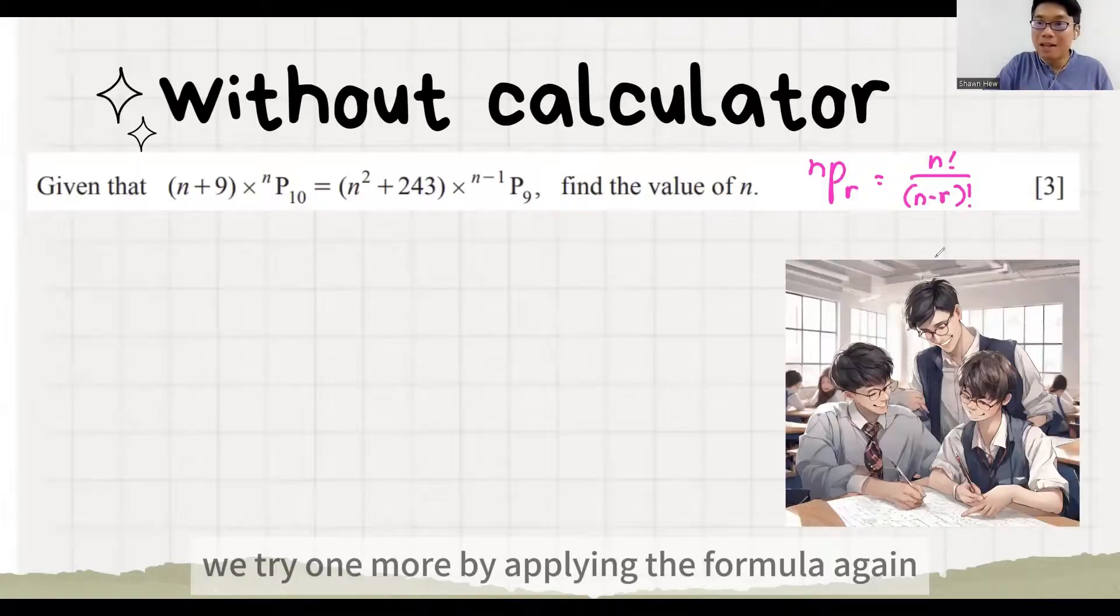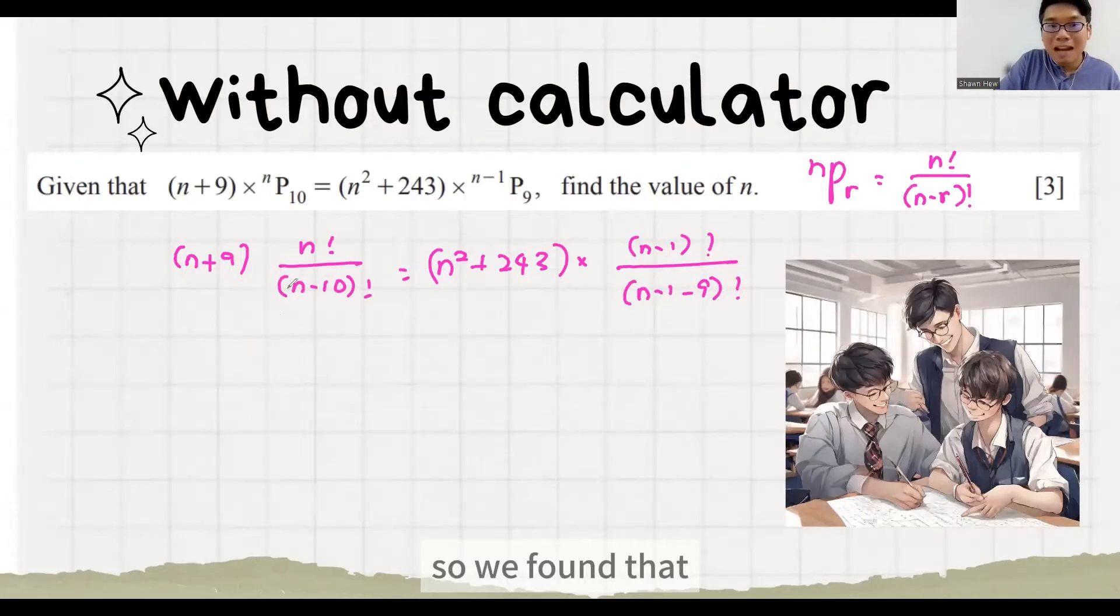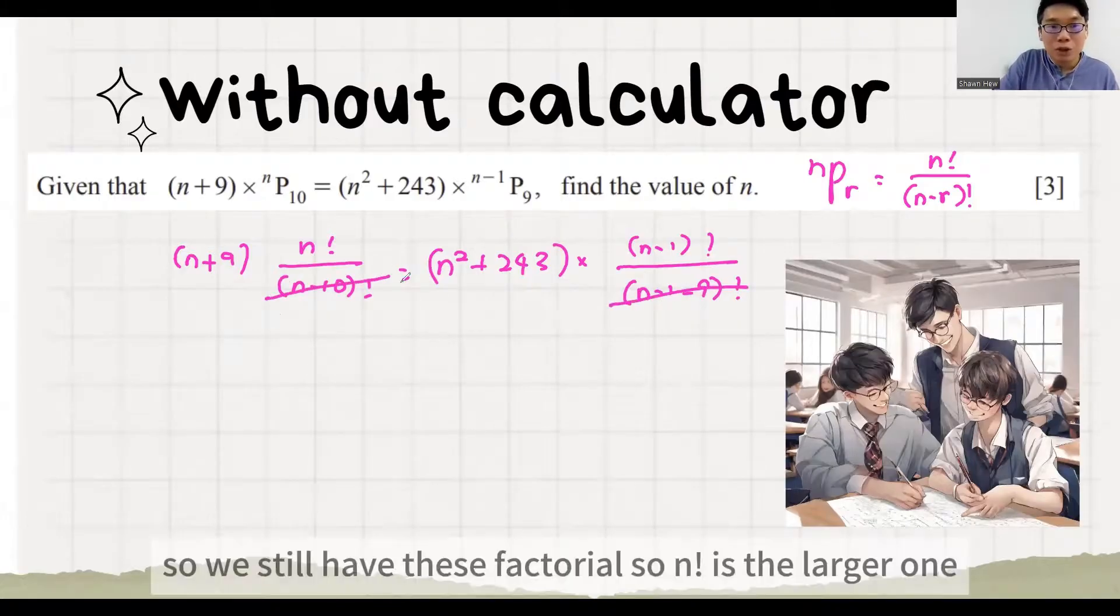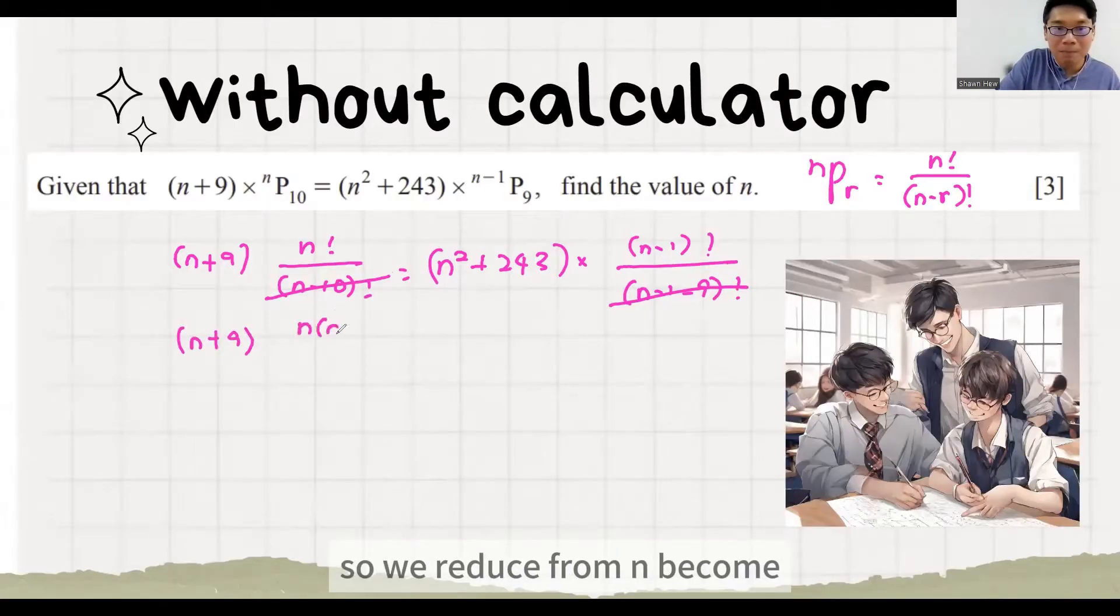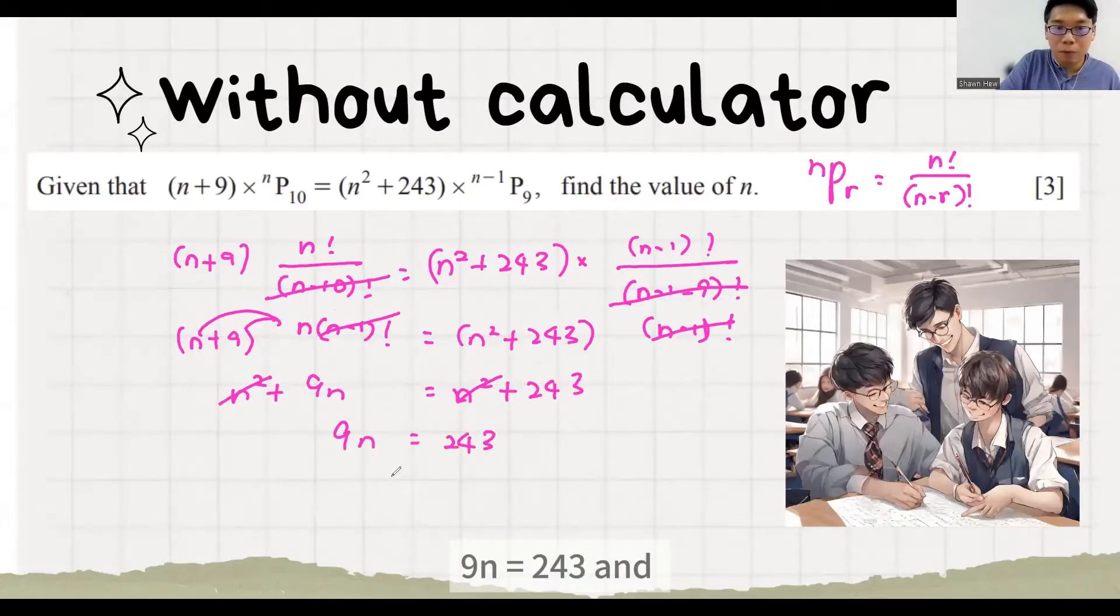We'll try one more by applying the formula again. So we found that n minus 10 factorial and n minus 1 minus 9 factorial is the same. This can cut. So we still have this factorial. So n is the larger one. So we reduce from n become this. Then we can remove this. Then we can solve the balance part. 9n equals to 243. n equals to 27.